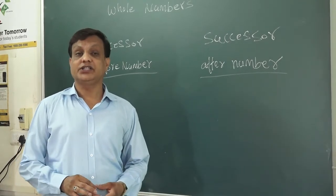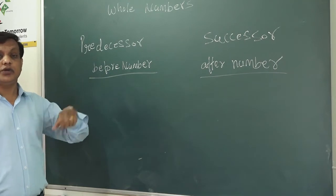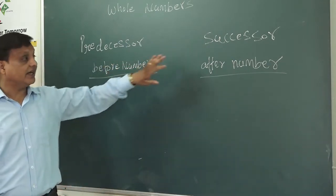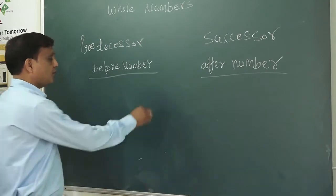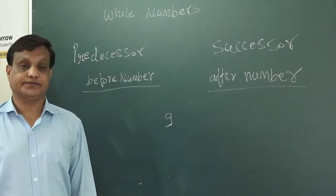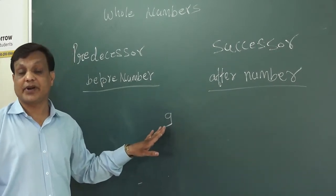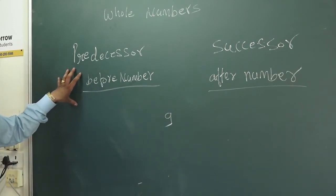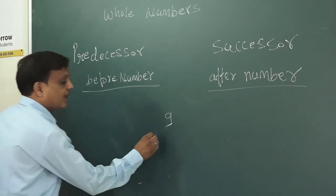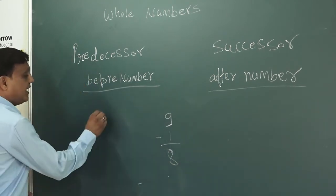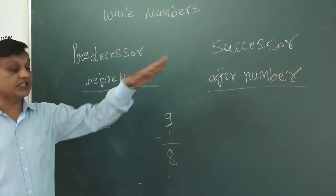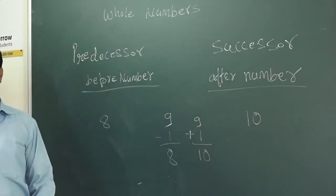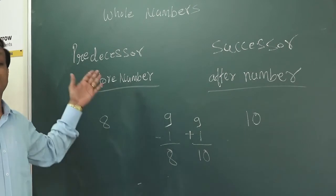In first, second, and third standard they ask you the number right before and the number right after. Now in higher standards, we use the words predecessor and successor. Suppose I give you 9. What is the predecessor of 9? You have to subtract 1 from the given number. So 9 minus 1 equals 8. So 8 is the predecessor of 9. What is the successor of 9? If you add 1 to the given number you get the successor. So 10 is the successor of 9.